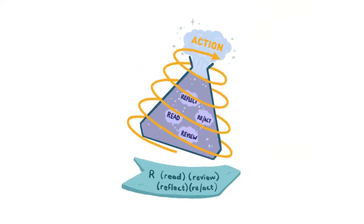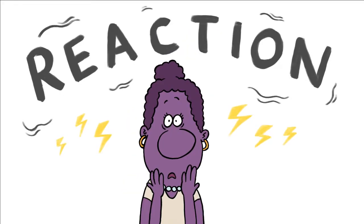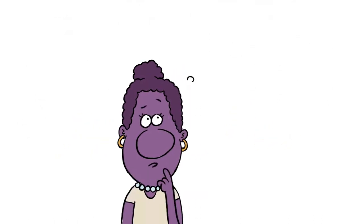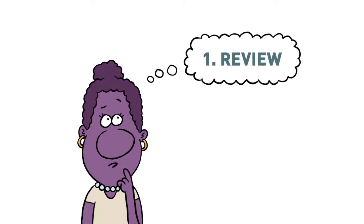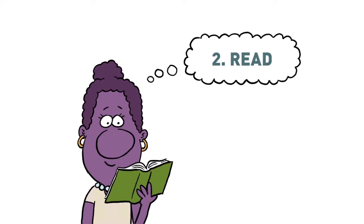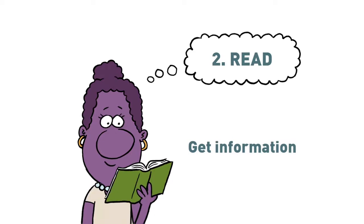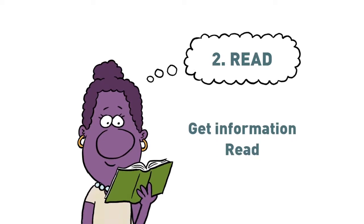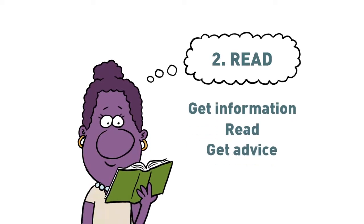Learning happens through an active process of reaction, which means a person thinks carefully about the situation in order to make choices, plan, and take actions. This process of reaction has four dimensions. One — Review: a person knows how they feel, what they know, and how to relate to themselves and others in the context of the disruption. Two — Read: they get information, which they can do by actually reading up on the subject as well as by asking and getting advice.